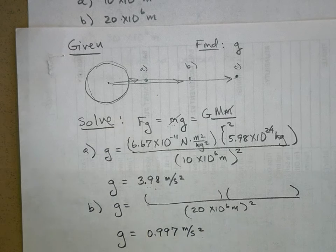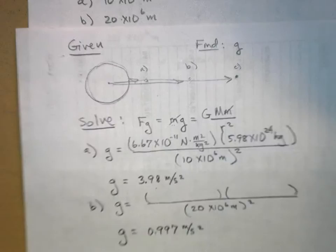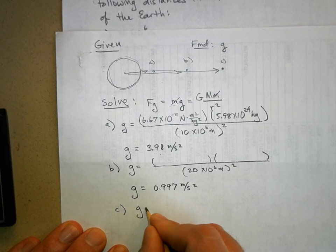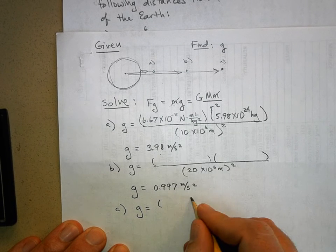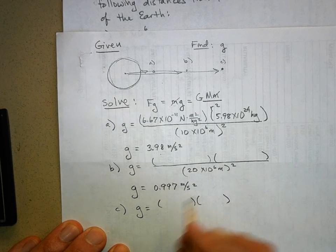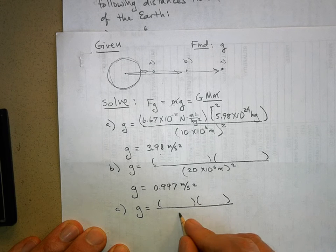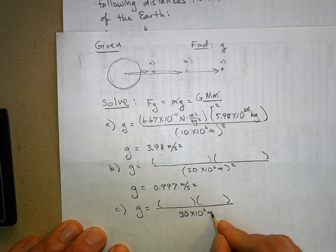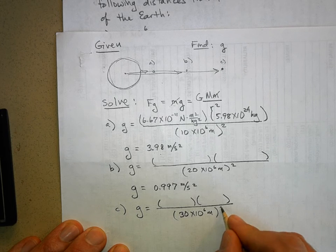For part C, you're going to do the same thing: big G times the mass of the Earth over 30 times 10 to the 6 meters quantity squared.